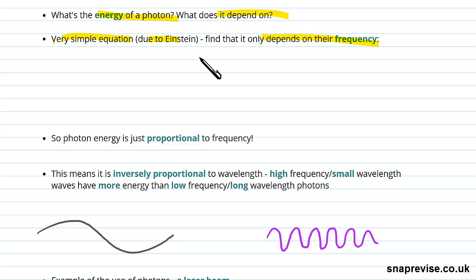And the formula is very simple, and it's E equals HF, where E is the energy of our photon.